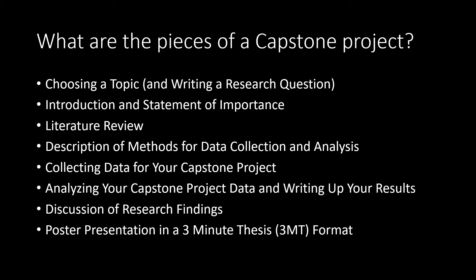There are a few different pieces of a capstone project. The first step over the next few weeks is choosing a topic and writing a research question. We'll then figure out what's important about that research question and write a statement about why it's important to examine it. Then we'll search the existing literature for books and articles on the topic, summarize them, and summarize social theory related to the topic.